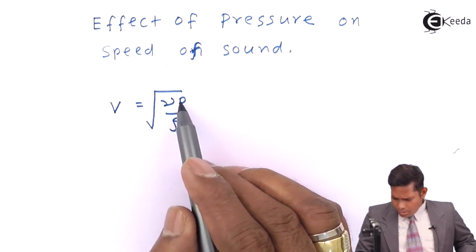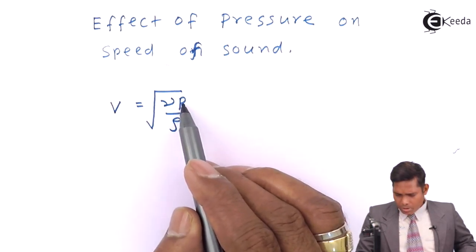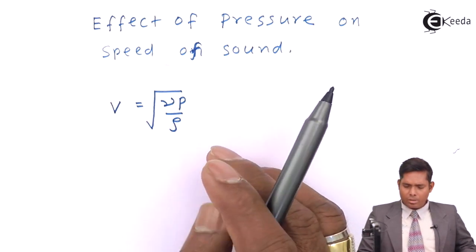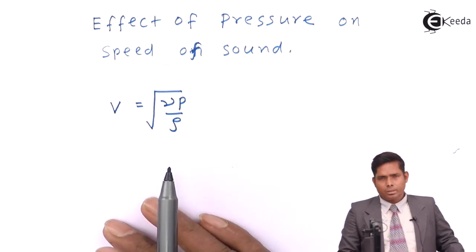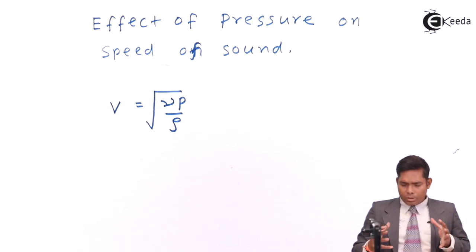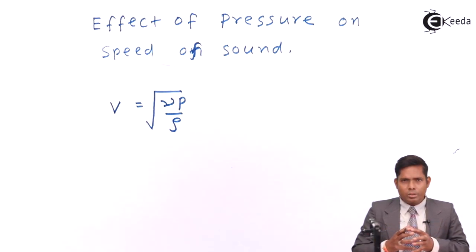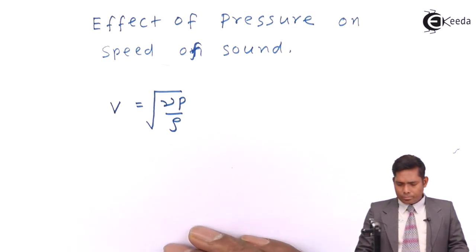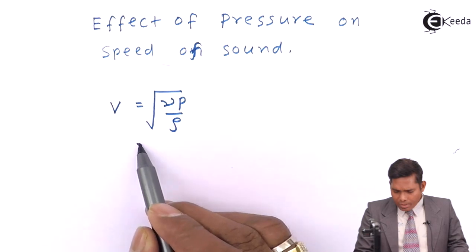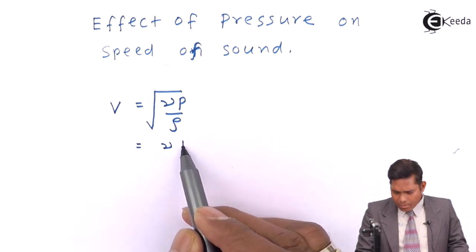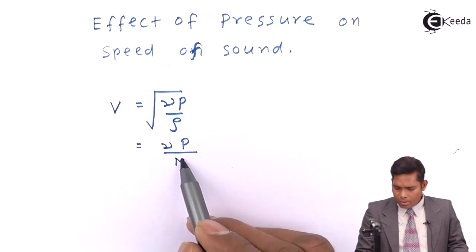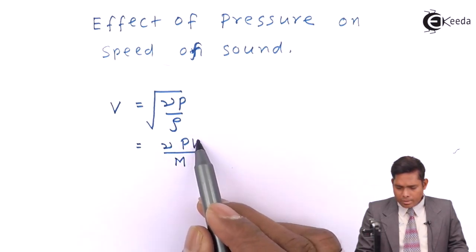Now how does V depend upon P, the pressure? Gamma is a constant. Density and pressure are dependent. When you increase the pressure, the volume is reduced and the density will decrease. I can write this as gamma P divided by density is mass by volume, mass of the gas by volume.